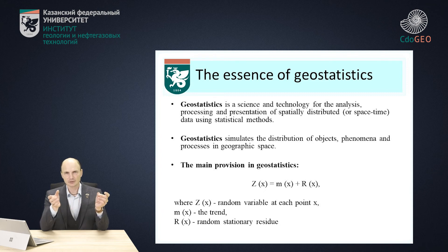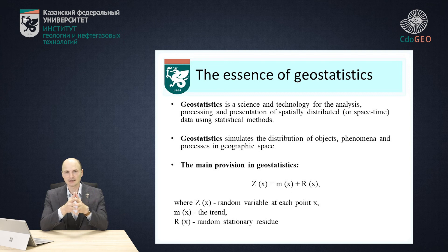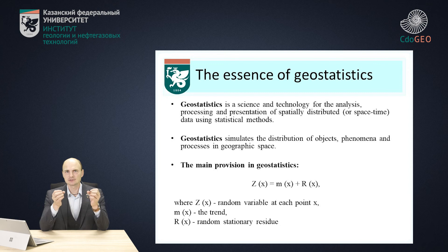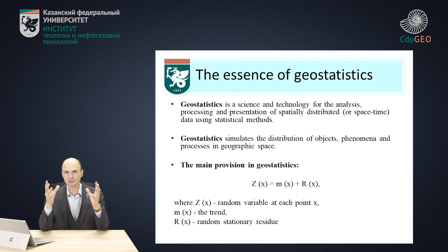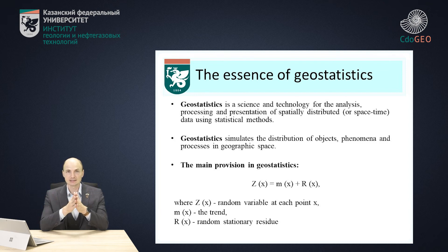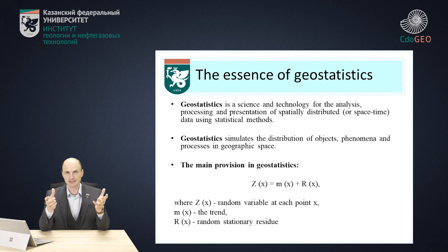Let's talk about geostatistics. Geostatistics is the science and technology for the analysis, processing, and presentation of spatially distributed data using statistical methods. If we try to put that simply, geostatistics is the statistics of objects with coordinates. Geostatistics simulates the distribution of objects, phenomena, and processes in geographic space. We need to have coordinates.